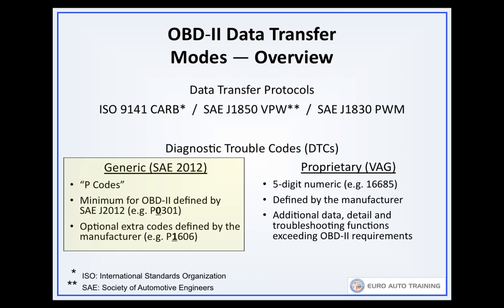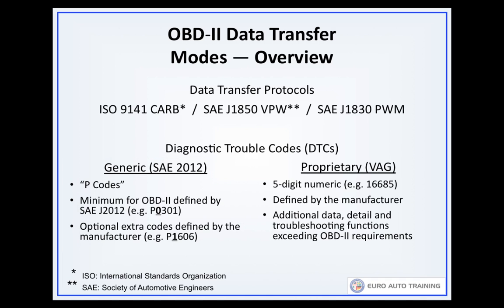OBD2 and the SAE standard J2012 define the diagnostic information that must be available to any commercially available scan tool. These are often called P codes, since the powertrain-related generic codes all begin with the letter P.